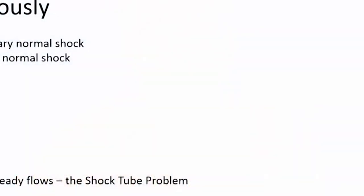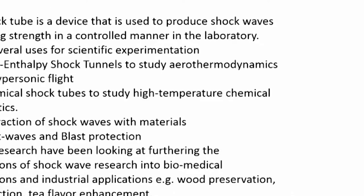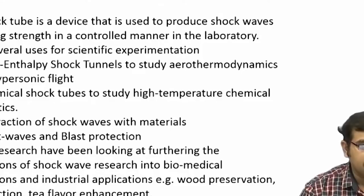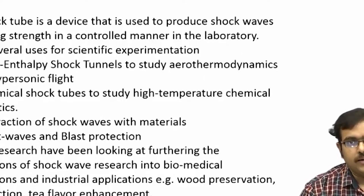The moving normal shock is actually an unsteady phenomenon, but we saw that by a proper transformation — by jumping into the normal shock frame — one could convert it to a stationary frame. Now we will deal with the shock tube problem, which is a 1D unsteady flow problem. It is a device used to produce shock waves in a controlled manner and of varying strength, mostly in the laboratory. It has several uses for scientific experimentation, and mainly it is used in high-enthalpy shock tunnels to study aerothermodynamic phenomena of very high Mach number flows.